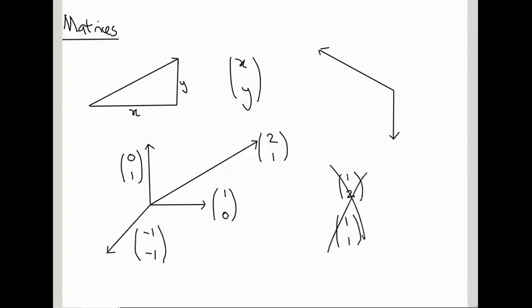So a lot of this module is going to focus on the interplay between algebra on the one hand, like columns of numbers, and geometry, like these pictures of arrows in the plane. So to make the connection to geometry, let's try and figure out, for example, what is the length of this vector? Let's give it a name. Let's call it V.